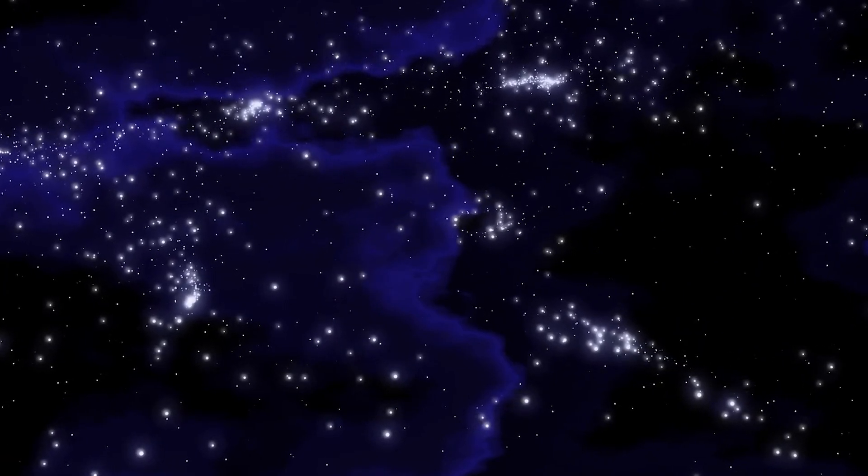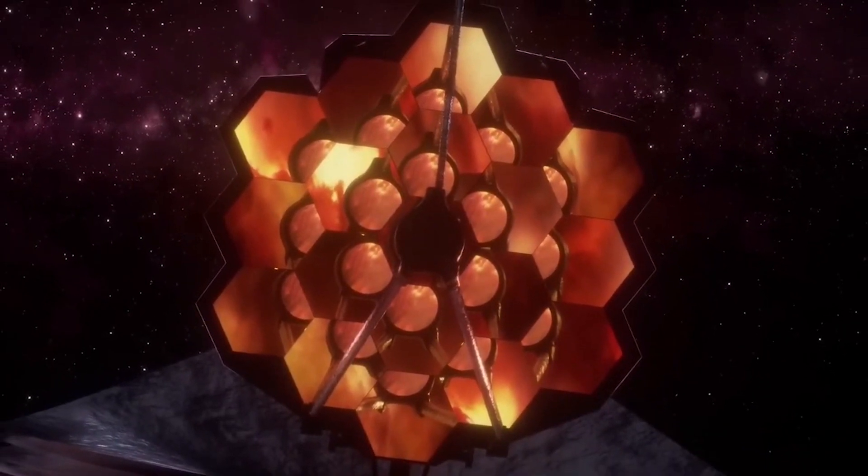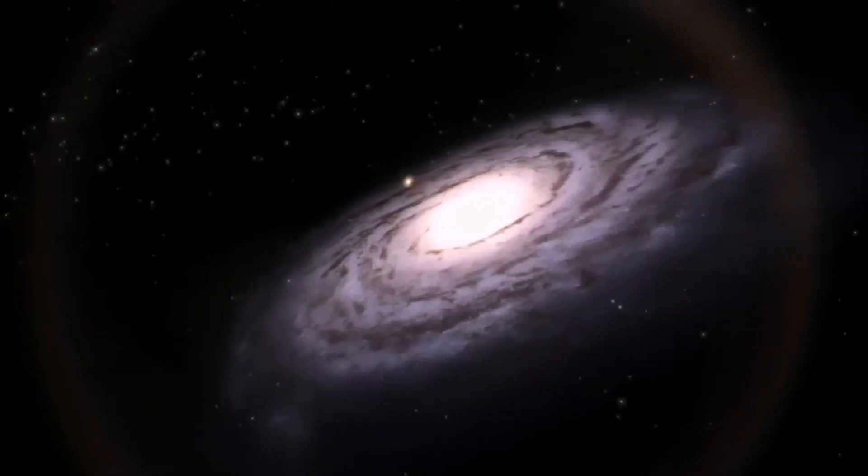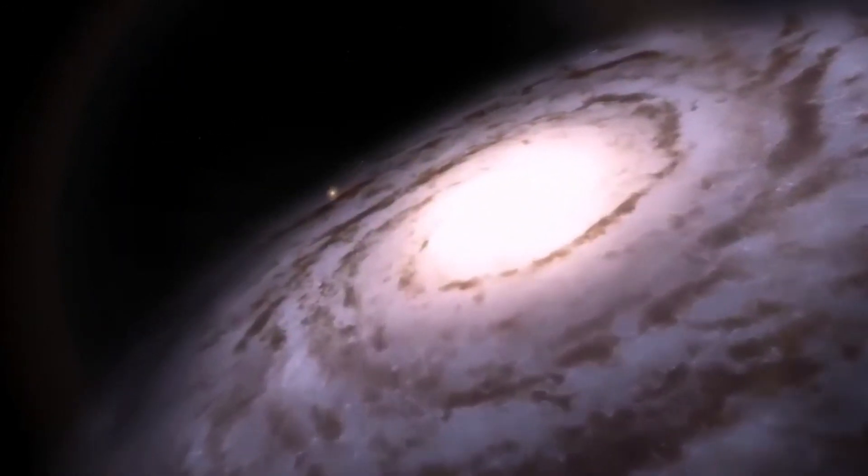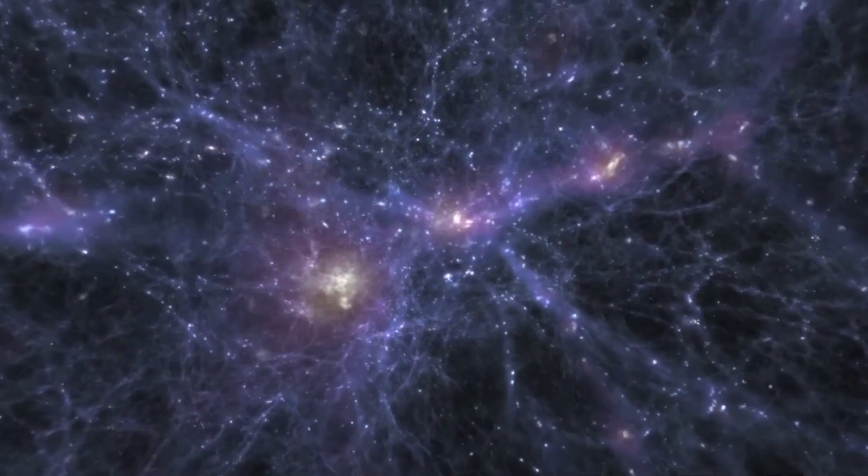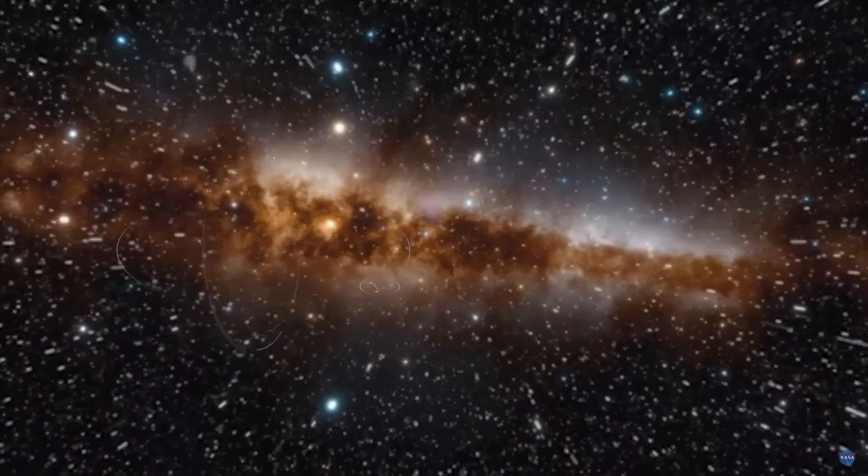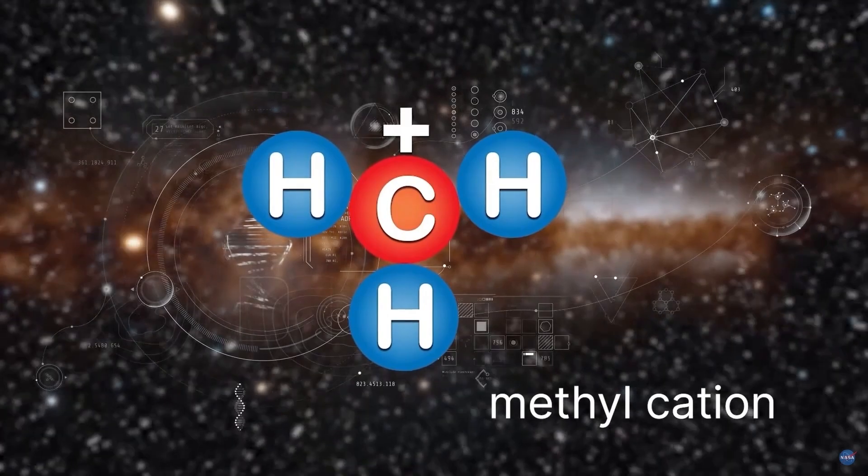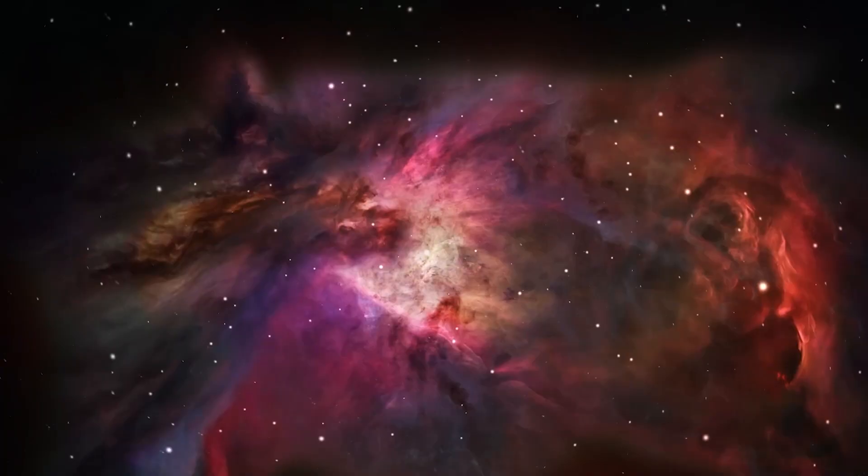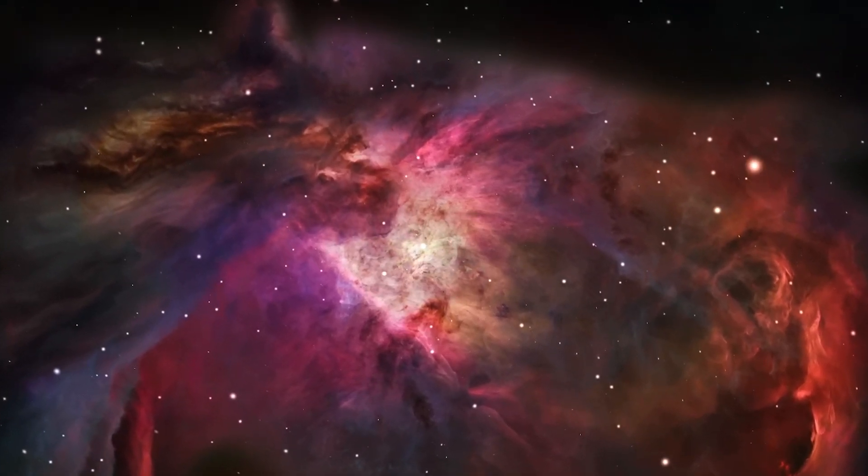The James Webb Telescope has also made discoveries in the early universe and interstellar chemistry. It identified the first filaments in the cosmic web, showing how galaxies and groups of stars form. It also detected the essential molecule methyl cation in a disk around a young star in the Orion Nebula, a place where planets form. This molecule plays a fundamental role in the chemistry between stars, and its discovery confirms its contribution to the formation of complex carbon-based molecules.